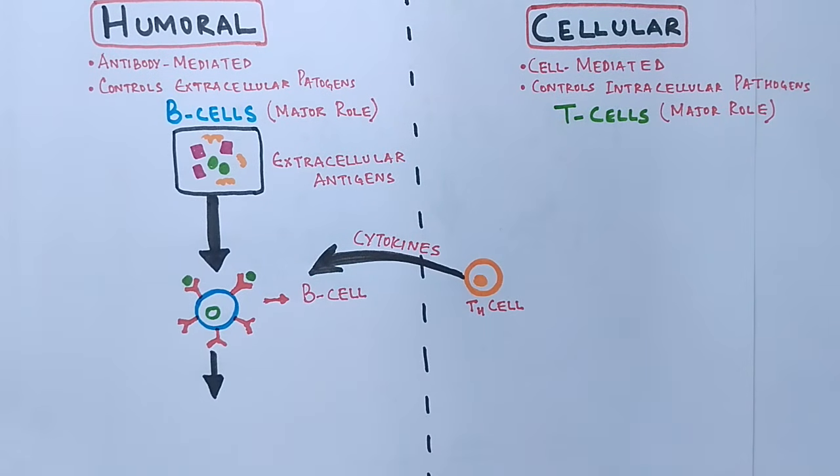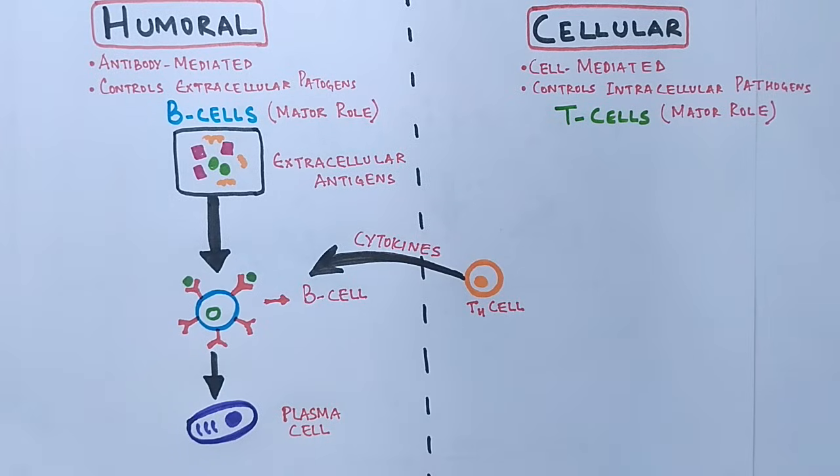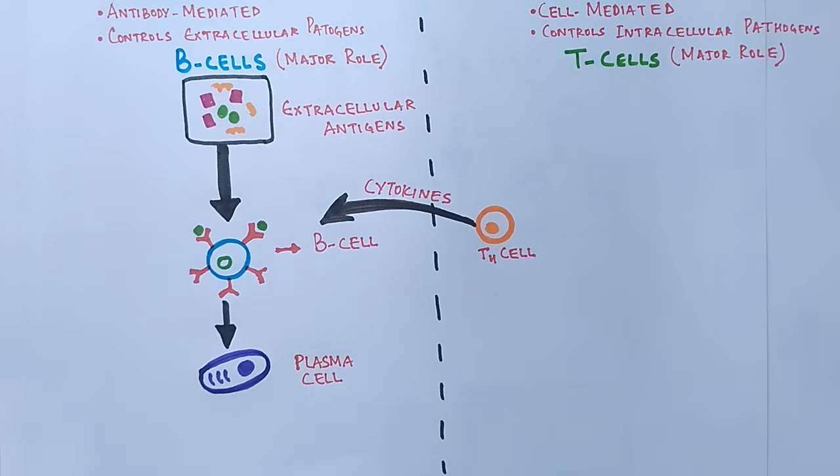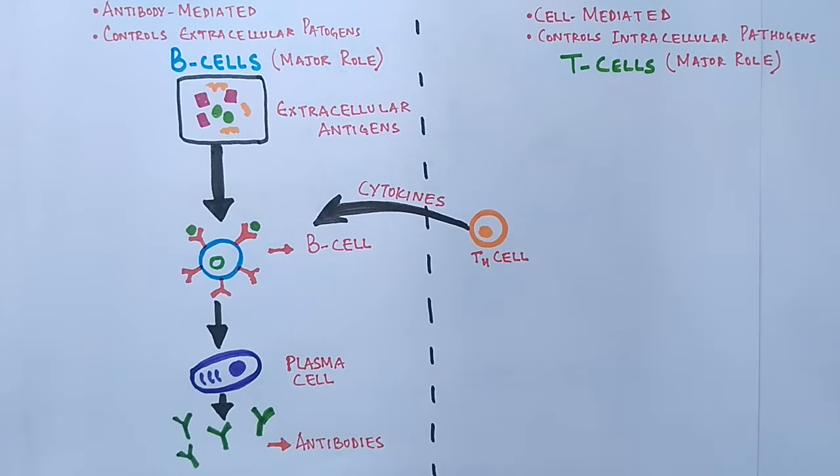Plasma cells have the capability to produce antibodies, so plasma cells produce antibodies for the specific pathogen. After that, the antibodies neutralize the extracellular pathogen and eliminate it. This is how humoral immunity works.